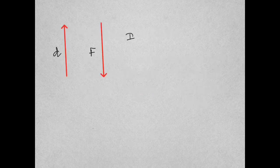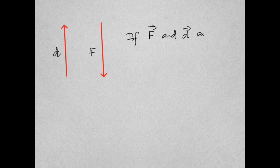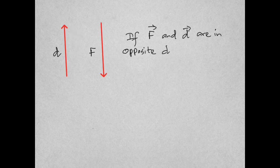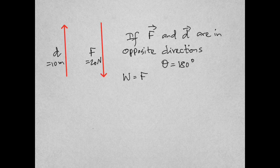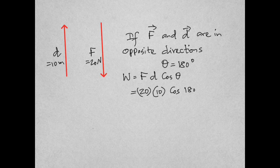On the other hand, if the force and distance are in opposite directions — for example, if this is the gravitational force and you're lifting something up against it — the angle between the force and displacement is 180 degrees. Using the same numbers as before, the work would be 20 times 10 times cosine 180, and cosine 180 is negative 1, so we get negative 200 joules.